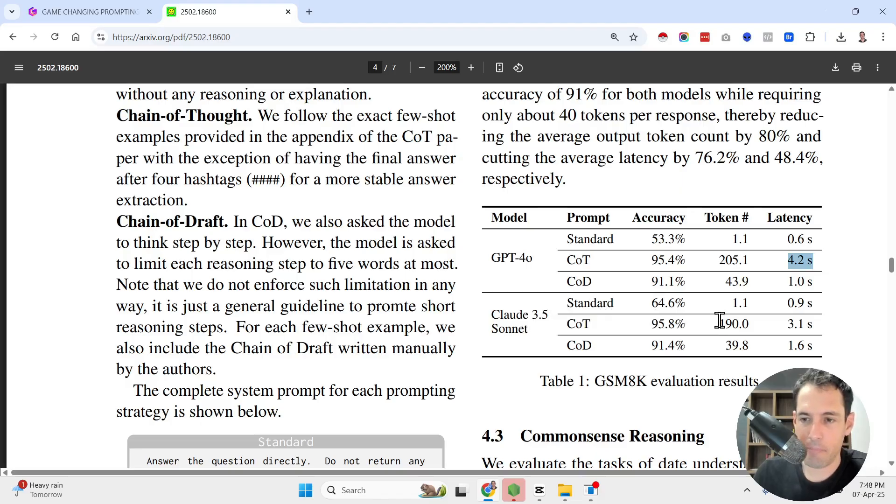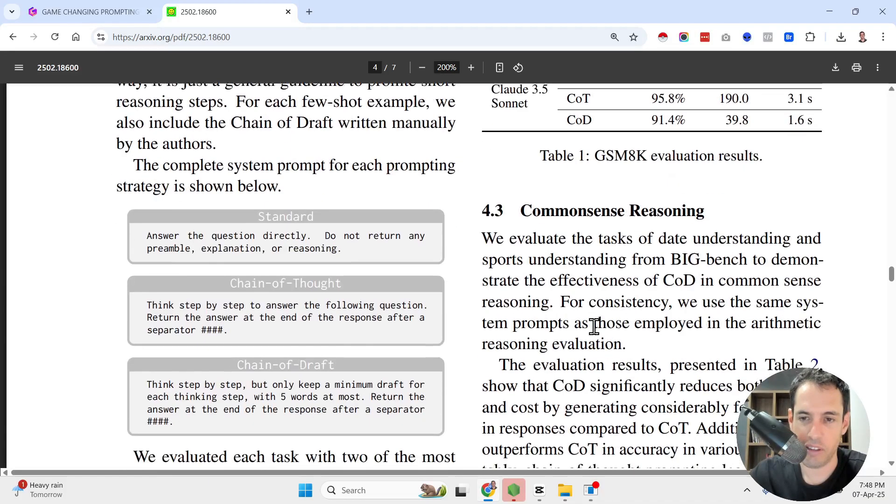Now in Claude Sonnet, we see even bigger differences in terms of tokens used and not as big of a difference in the latency. But in terms of accuracy, again, chain of thought yields better results, but the chain of draft is almost there, way better than the standard. And the latency and the token output required is significantly smaller than chain of thought.